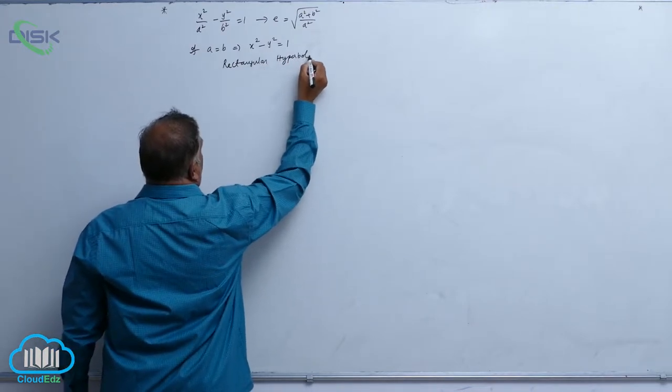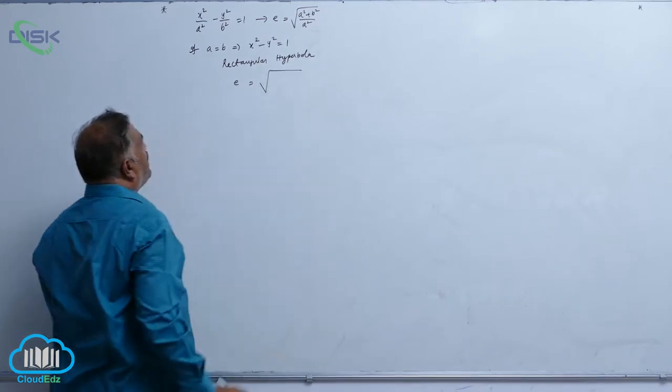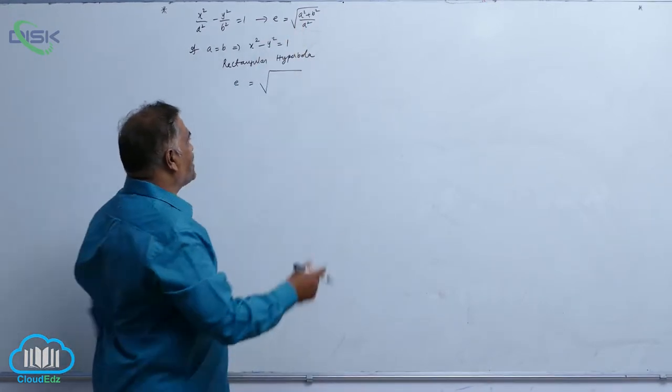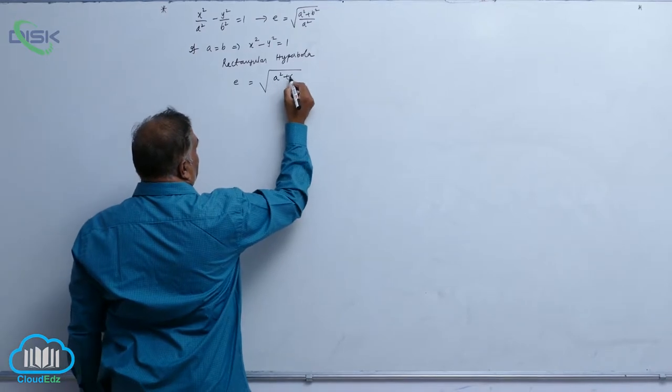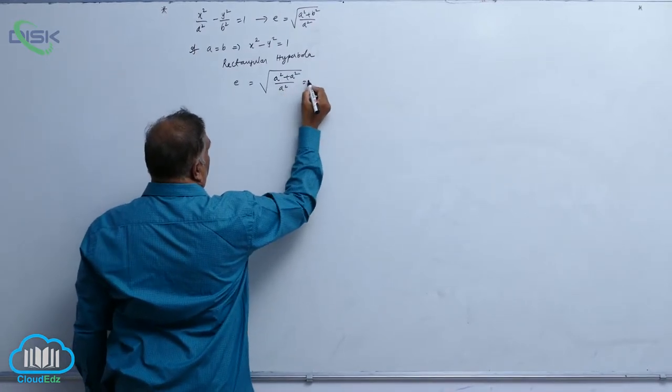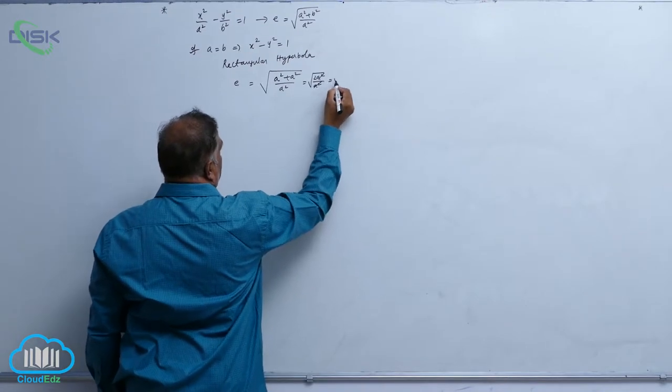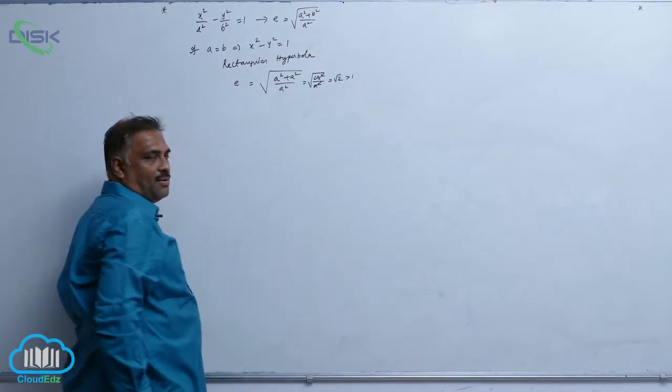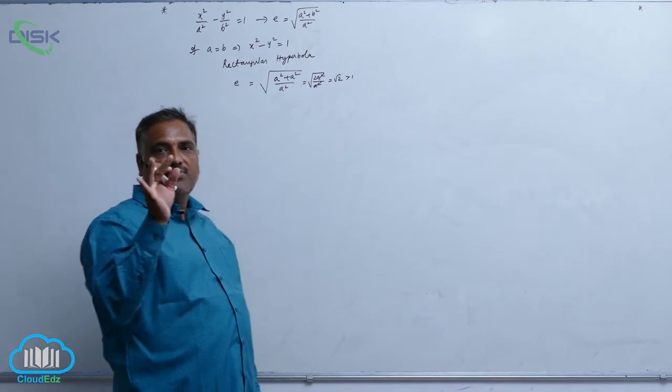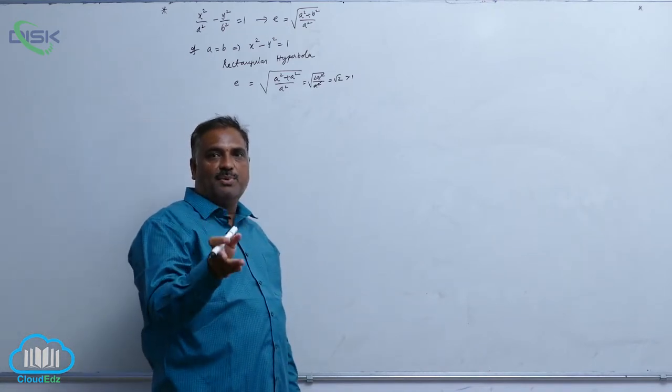Its corresponding eccentricity changes as root of, put a equal to b in this equation, a square plus a square divided by a square, that is root of 2a square by a square cancels root 2, greater than 1. We know that in case of hyperbola, eccentricity must be more than 1.